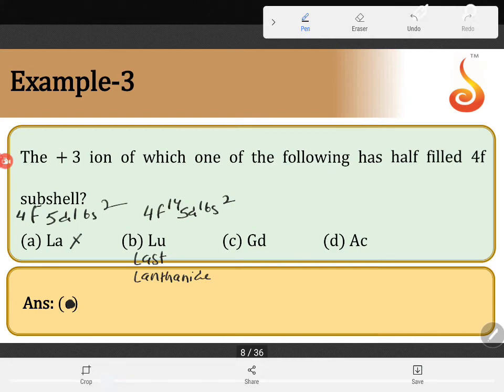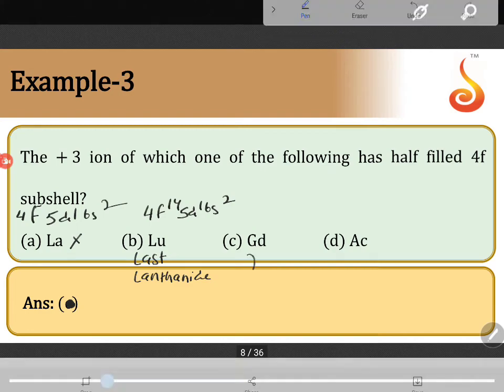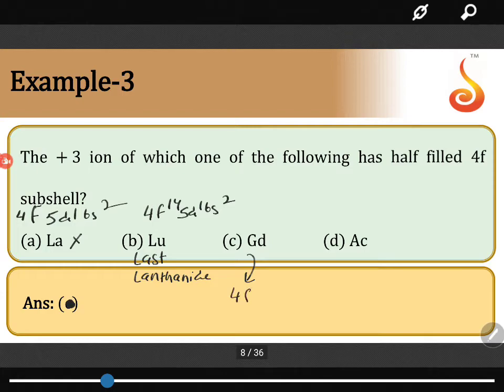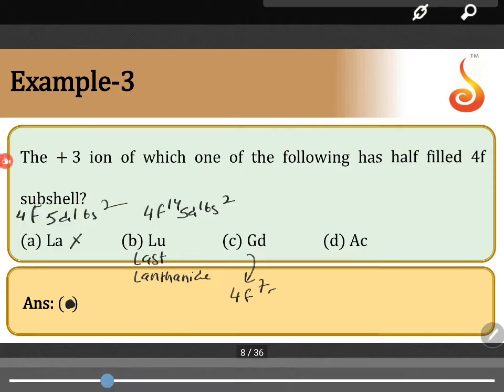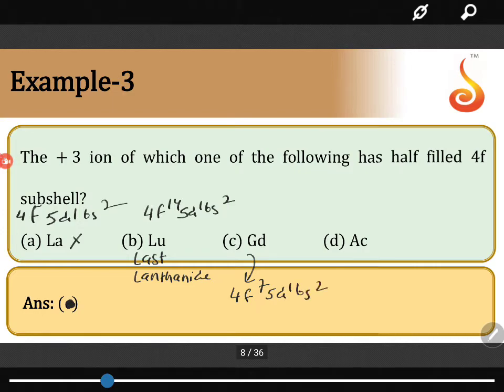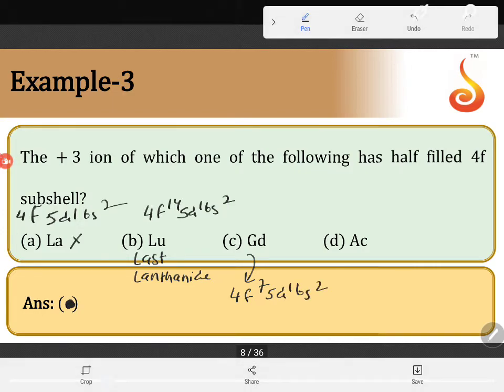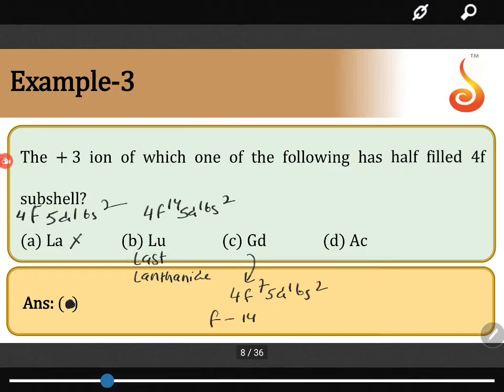Gadolinium is containing an electronic configuration of 4F7, 5D1, 6S2. So totally all of you know that F electrons can accommodate 14 electrons,